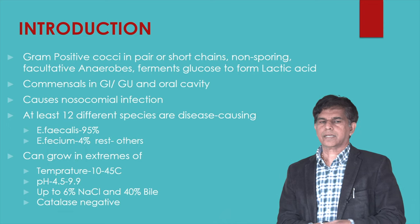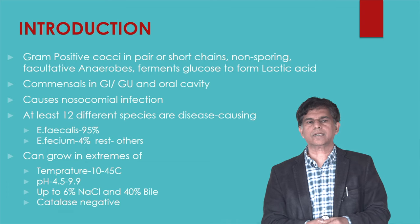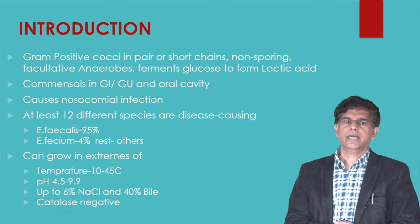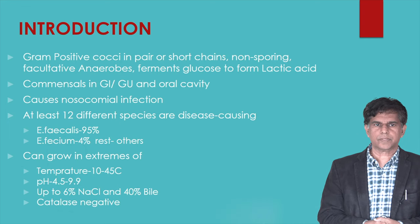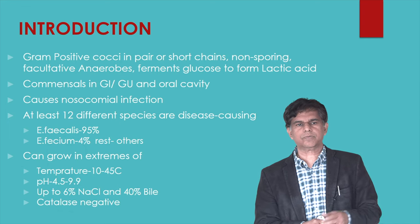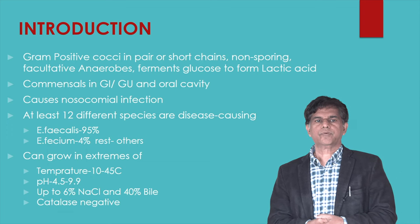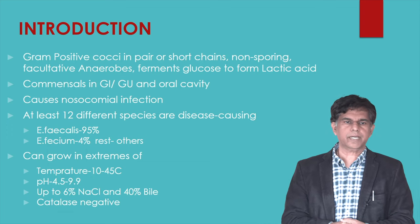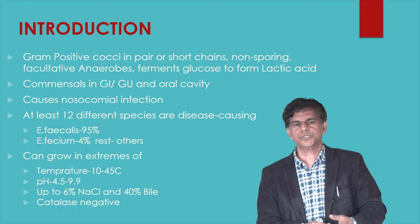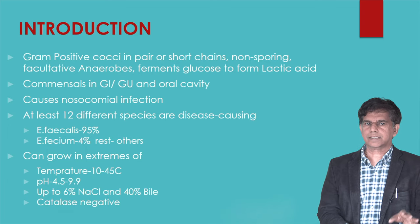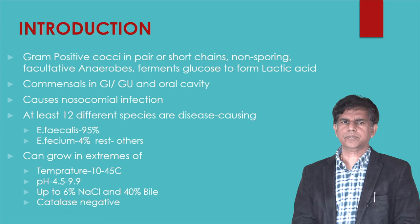Enterococci can cause nosocomial infections. At least 12 different species are disease-causing — Enterococcus faecalis accounts for 95% and Enterococcus faecium for 4%. They can grow in extremes of temperature from 10 to 45 degrees Celsius, pH 4.5 to 9.9, up to 6.5% NaCl, and 40% bile, which is why they thrive in the GI system. They are catalase-negative.